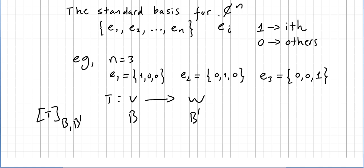The standard basis for the space C to the power of n is {e_1, e_2, ..., e_n}, so it will be n vectors. This is what we call the standard basis: e_1, e_2, ..., e_n where e_i has 1 in the ith coordinate and 0 in all others.